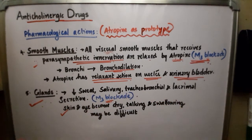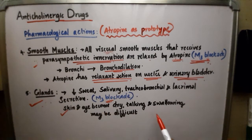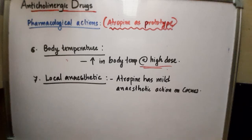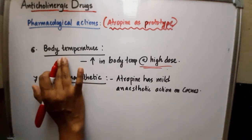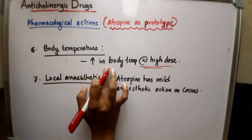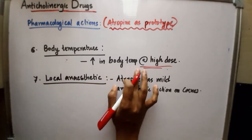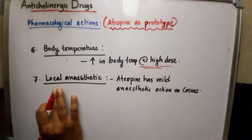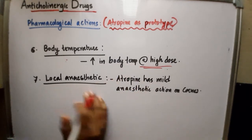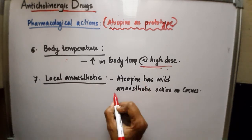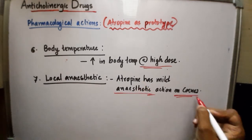As a result of decreased sweat and secretions, the skin and eyes become dry, and talking and swallowing may become difficult. Atropine increases body temperature at high doses. It also has mild local anesthetic action on the cornea.